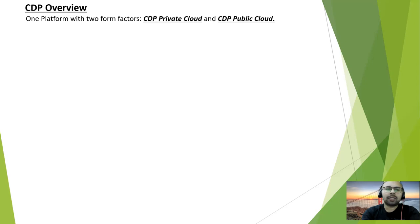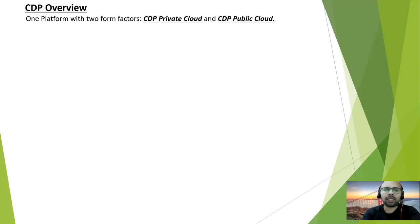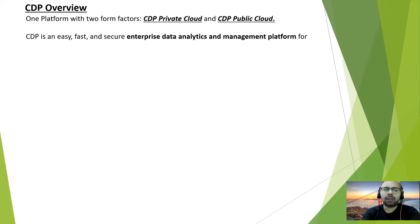CDP is a single platform for two factors: CDP private cloud and CDP public cloud. CDP private cloud is basically for on-premises infrastructure, and CDP public cloud can be used with public cloud providers like AWS, Azure, and Google Cloud. CDP is an easy, fast, and secure enterprise data analytics and management platform where we can perform any type of analytics or manage our data for its end-to-end data lifecycle.